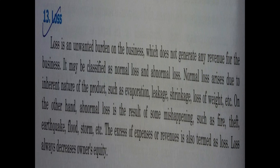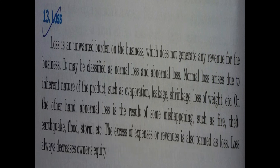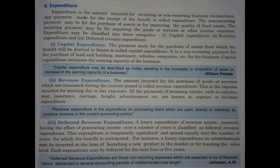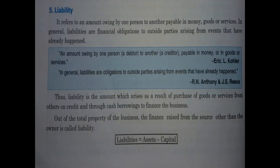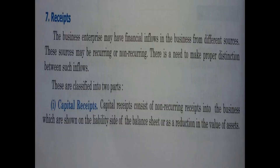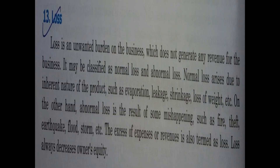Thanks for watching. In the next part, we will try to include the maximum number of terminologies. There are 40 terminologies in total according to this book; we have now covered 13, and in this part we discussed 9 terminologies. As a recapitulation, in this part we covered: liabilities, assets, receipts, expenditure, expense, income, profit, gain, and loss. Accounting terminology part 3 is coming soon — thanks for watching, Suri's Institute of Commerce.